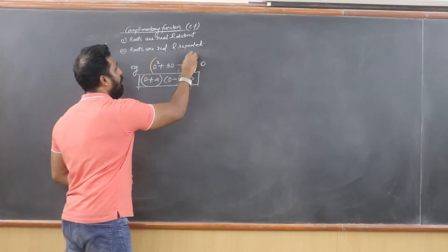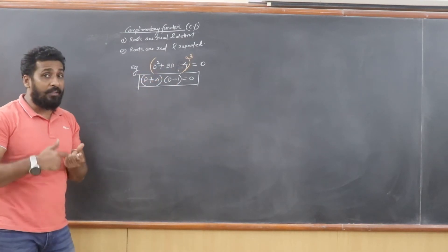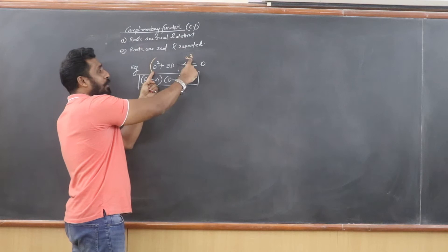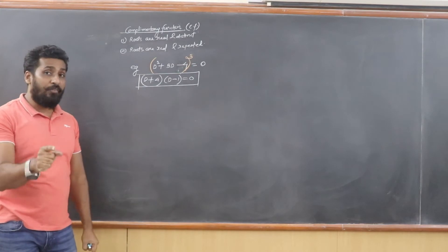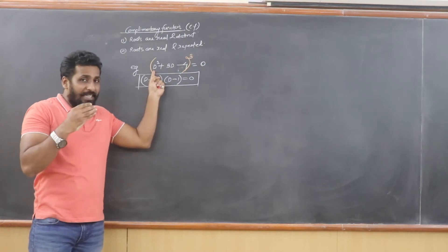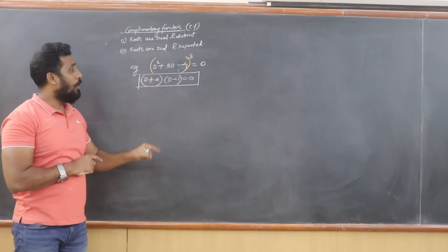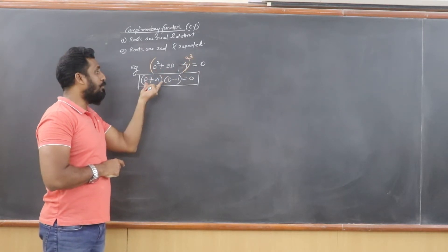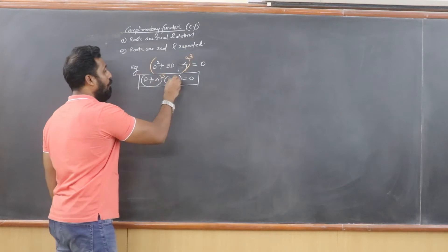Now if I take (d² + 3d - 4)³, this expression repeats 3 times. The highest power of d is d², and taking the cube gives d⁶. So we should get 6 roots of d. The factors become (d + 4)³ (d - 1)³, since the entire bracket is raised to power 3.